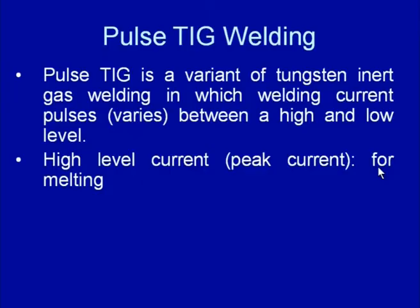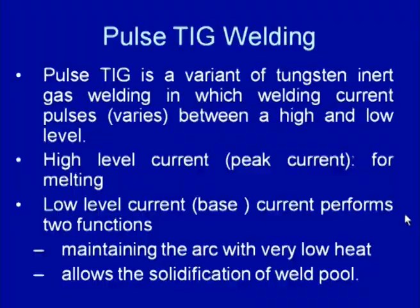The high level current is termed the peak current and is mainly used for melting. The level of the high current is decided on the basis of the heat to be generated for melting the faying surfaces. The low current is called the base current, and its main function is to maintain the welding arc with very low heat so that during this period solidification of the weld pool can take place.